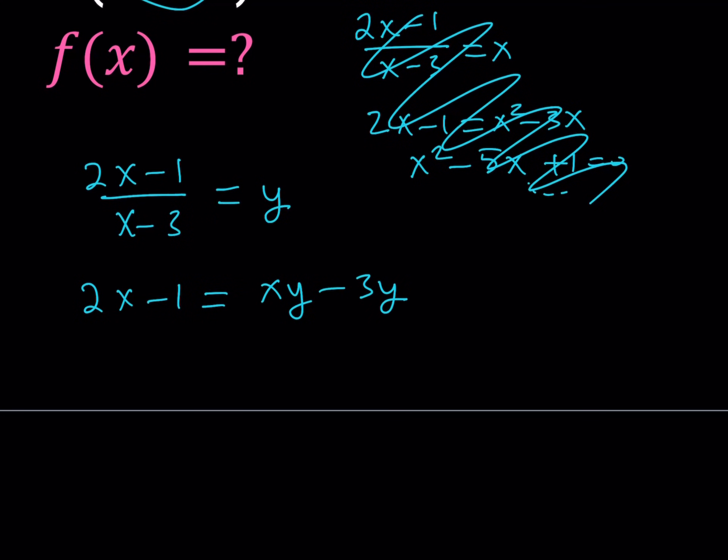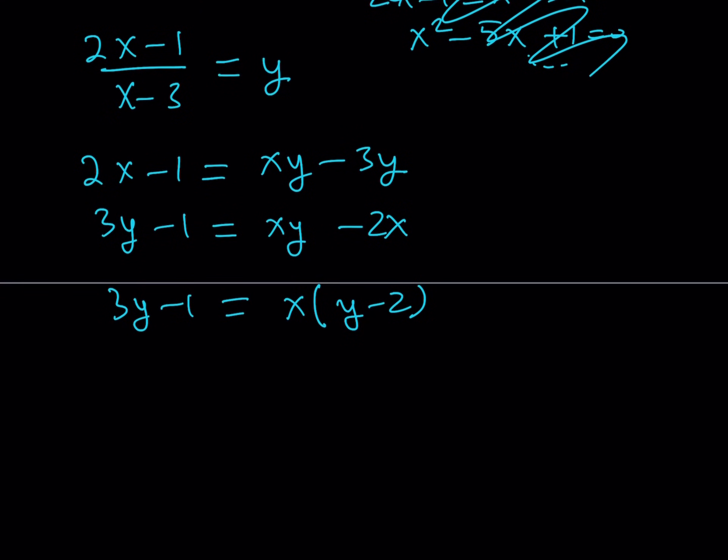And then I want to solve for x. So I want to bring the 3y over here and the 2x here. In other words, I'm subtracting 2x from both sides and I'm adding 3y to both sides. Now we can factor out x.